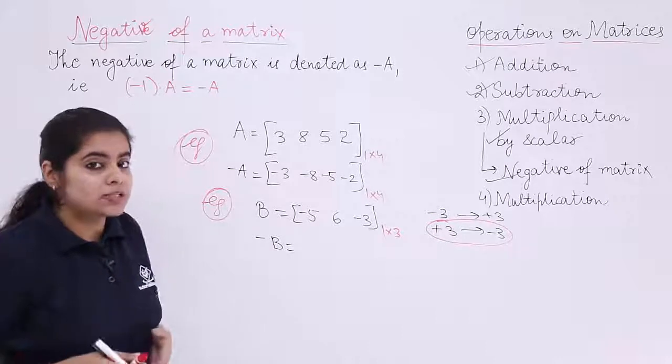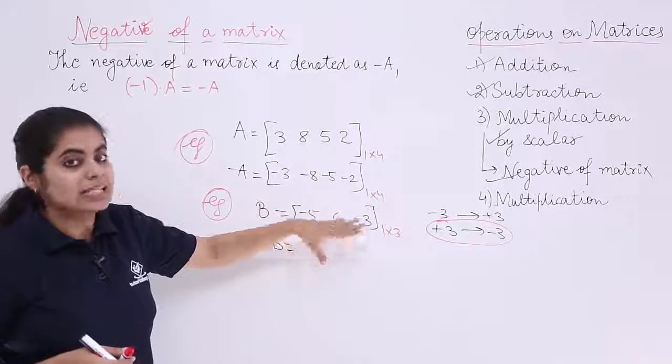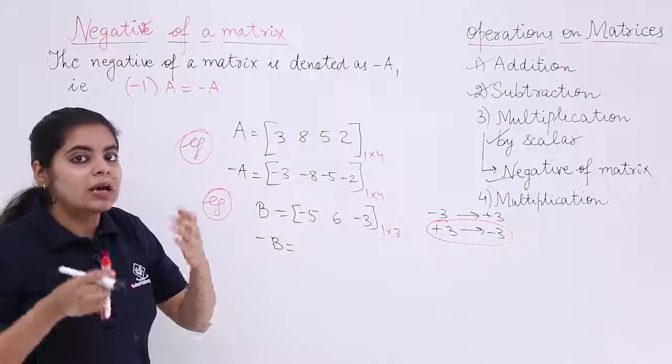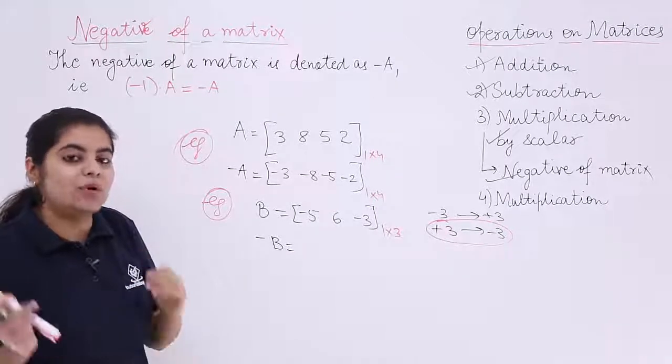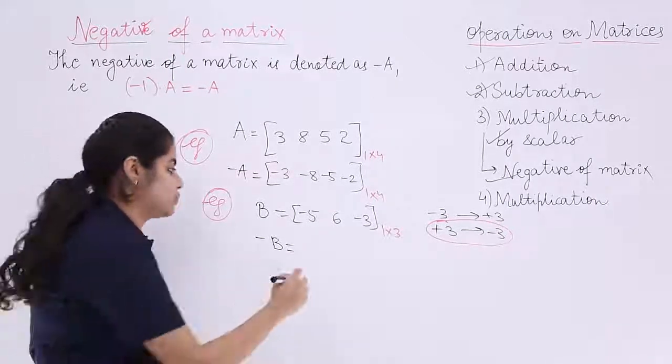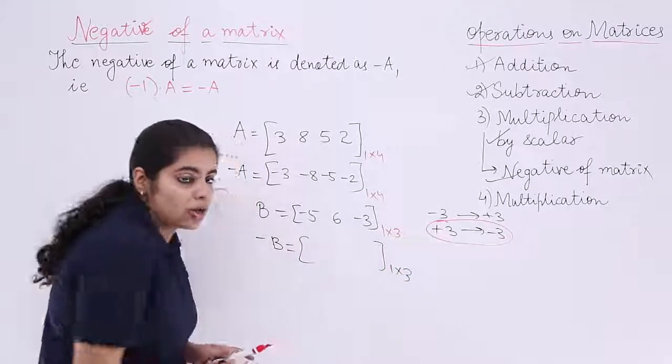Minus B in the question means what? Negative of a matrix. Negative of a matrix means make negative as positive, positive as negative. Multiply by minus 1. Let's see now. 1 by 3 is the order.